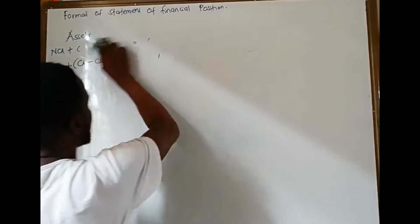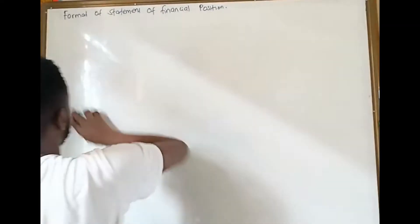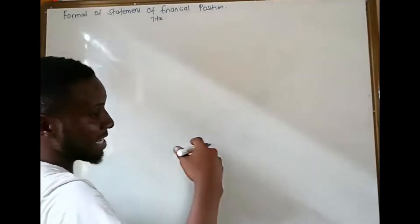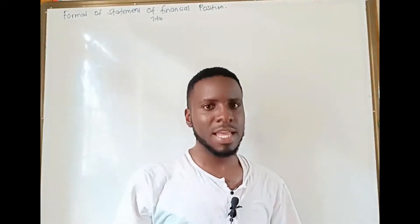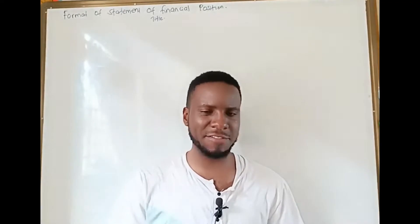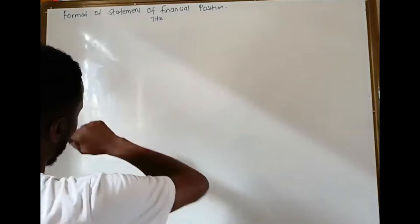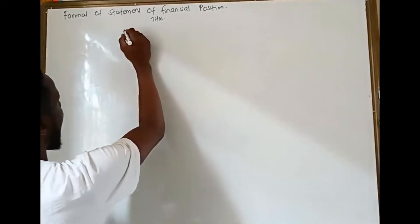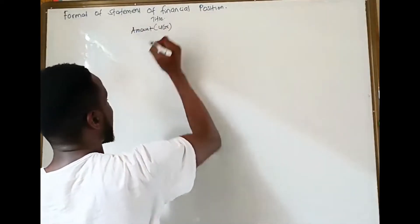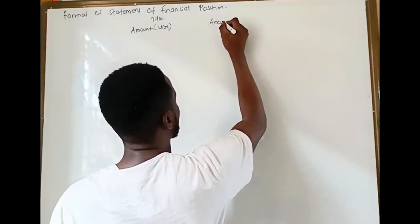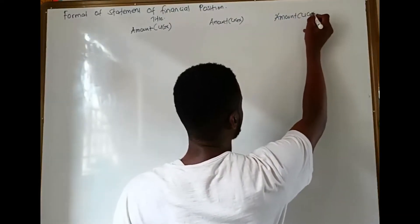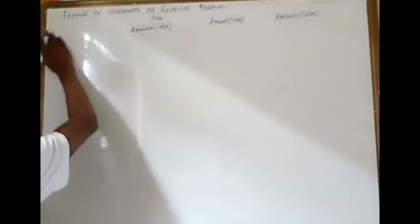Now I will take you through the format. You bring your title here — for example, 'X Limited — Statement of Financial Position as at 31st December 2024,' or whatever year is given. After the title, we have our amount columns. I'll use Uganda Shillings for now. We shall have amount sections for the various categories. We start with our assets.